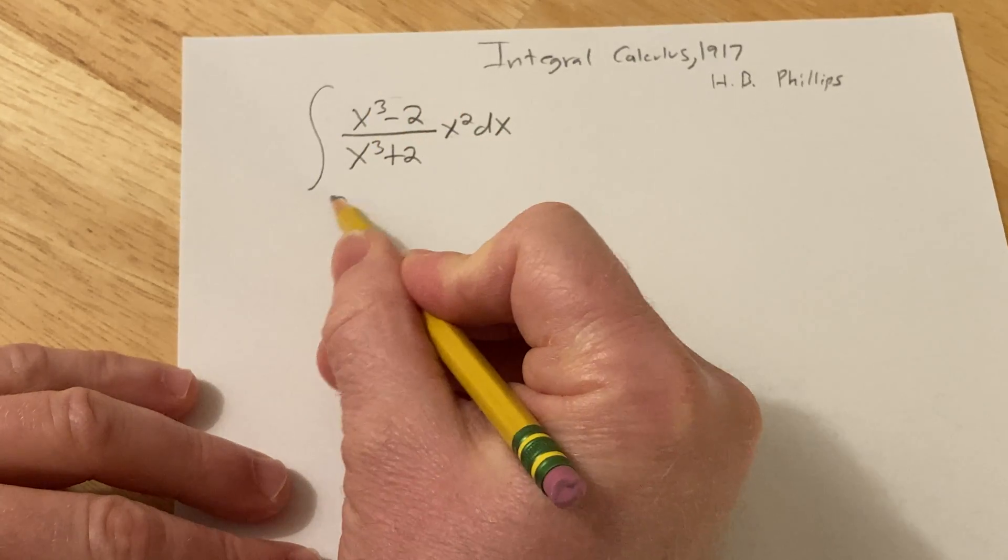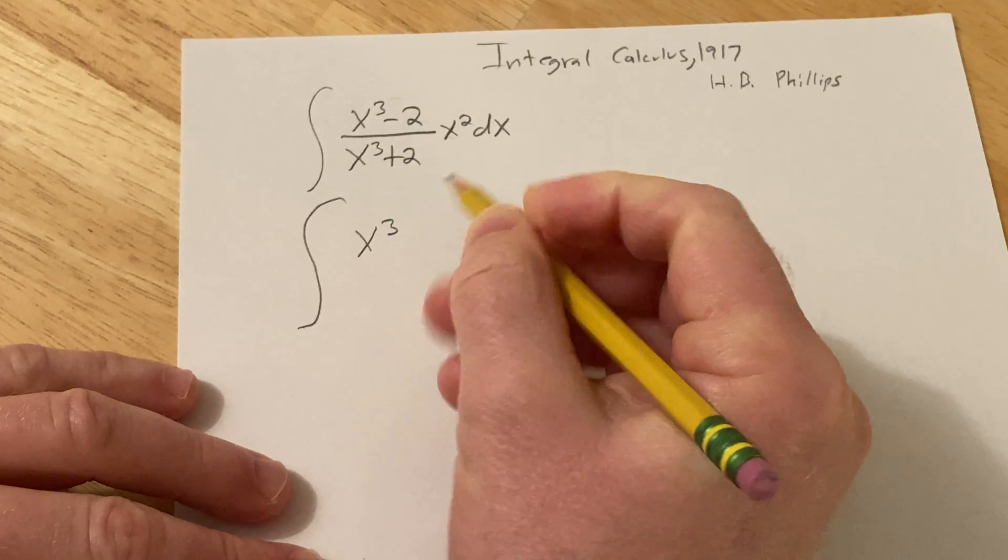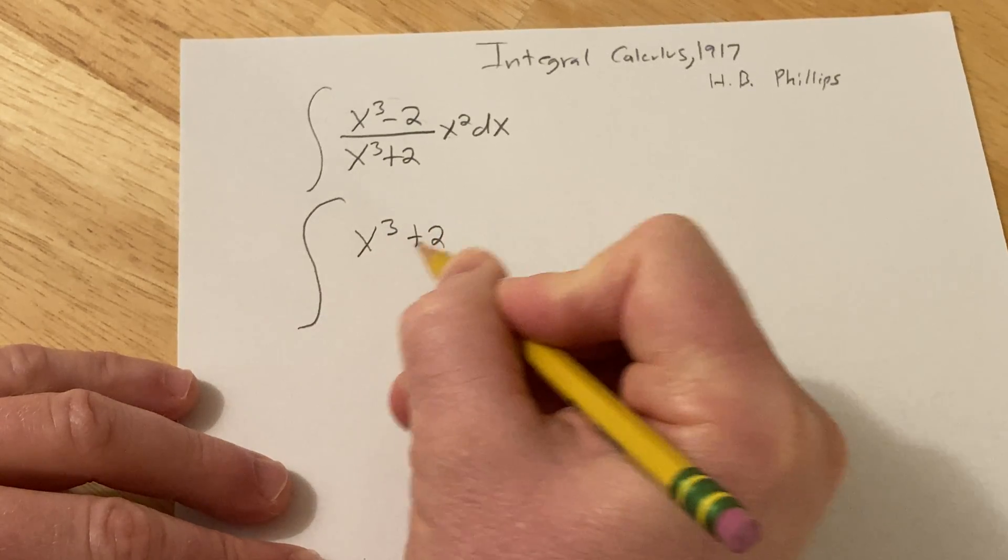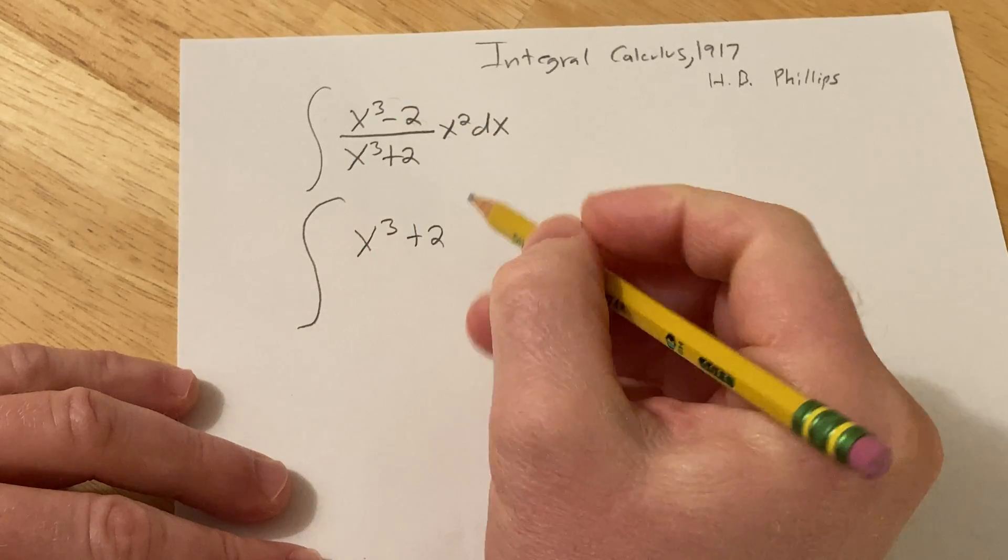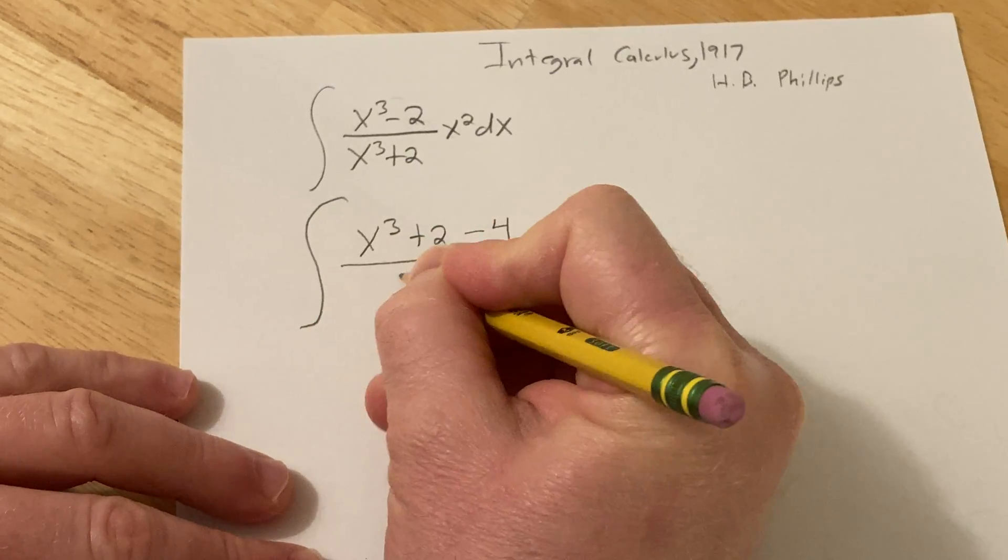So what I'm thinking of doing is the following. This is really x cubed plus 2. That's what we want, right? We want an x cubed plus 2. So what we can do is we can subtract 4 like this.